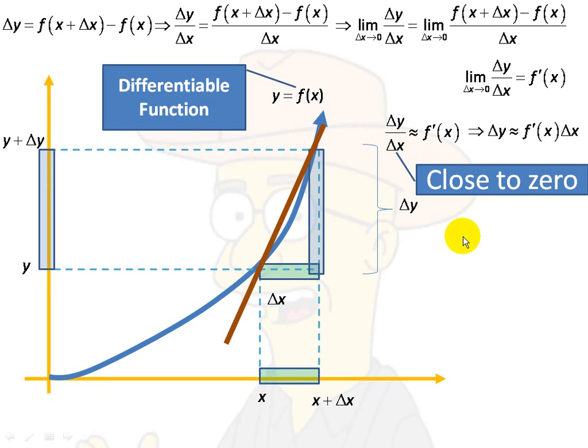Now, that being the case, you can see clearly that if you multiply both sides by delta x, you get an approximation for delta y. It's f prime of x times delta x. Okay, so that's really nothing new, it's just some observations that we're making.